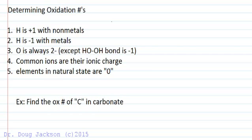The first is hydrogen is plus one with nonmetals, and so for HCl, methane CH4, any compound in which hydrogen is bonded to a nonmetal, it's going to take a plus one oxidation number. And then with a metal such as sodium hydride or potassium hydride, it's going to be minus one in an ionic compound with a metal.